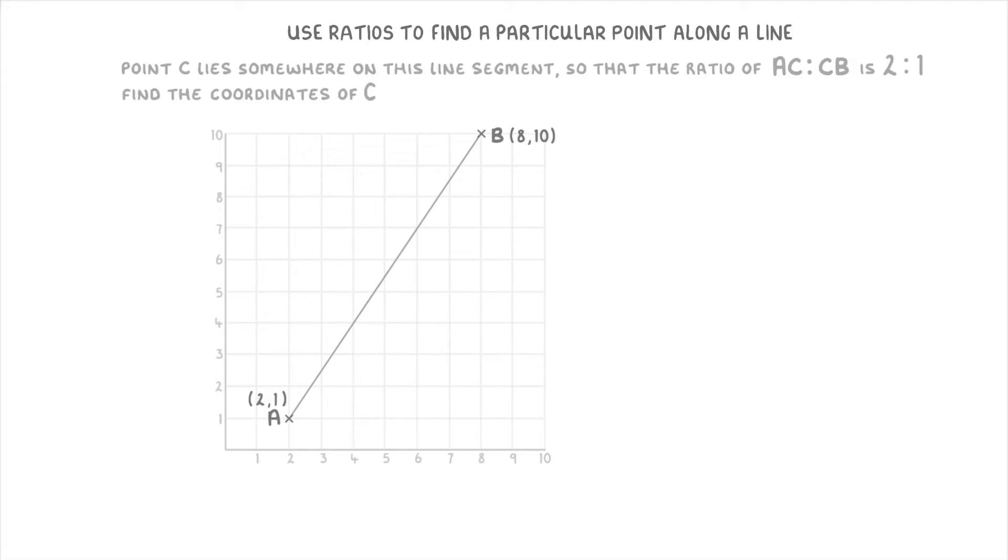Well, the first thing we need to do is think about what the ratio 2 to 1 really means. And basically, it just means that the A to C section, so the distance between A and C, is 2 times bigger than the CB section between C and B.